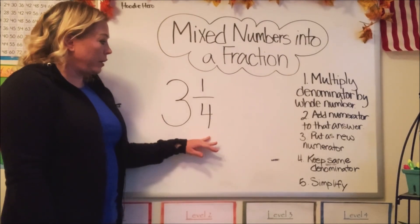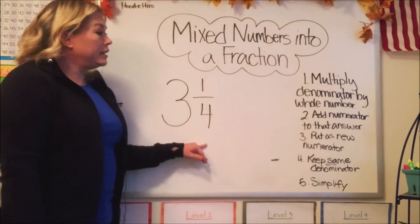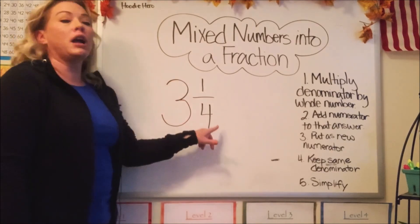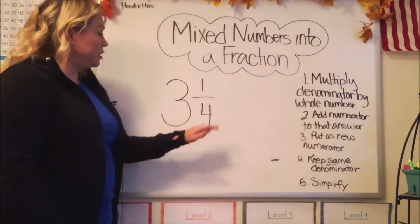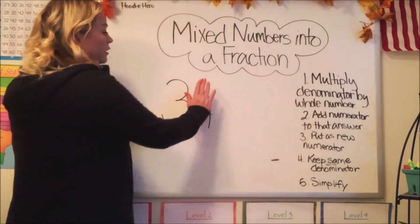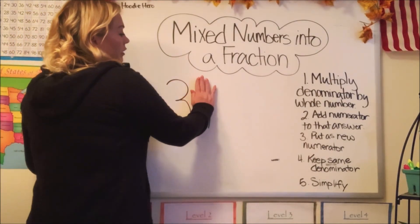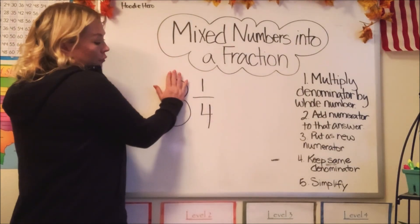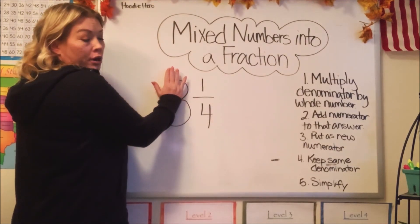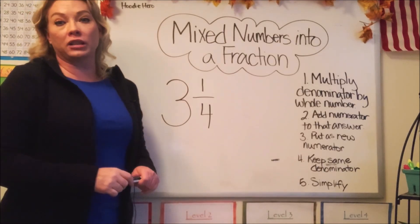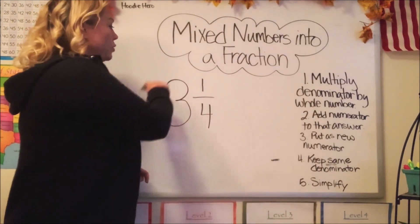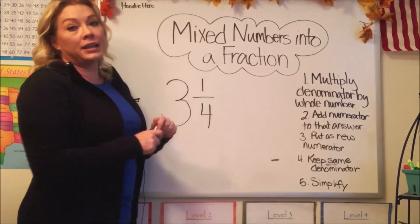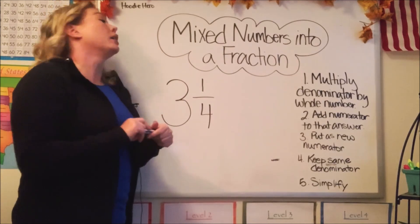Let's review real quick that a mixed number is the combination of a whole number with a fraction. If we just had the whole number three, that would just be a whole number. If we just had the fraction one-fourth, that would just be a fraction. So those together, mixing them, is a mixed number.